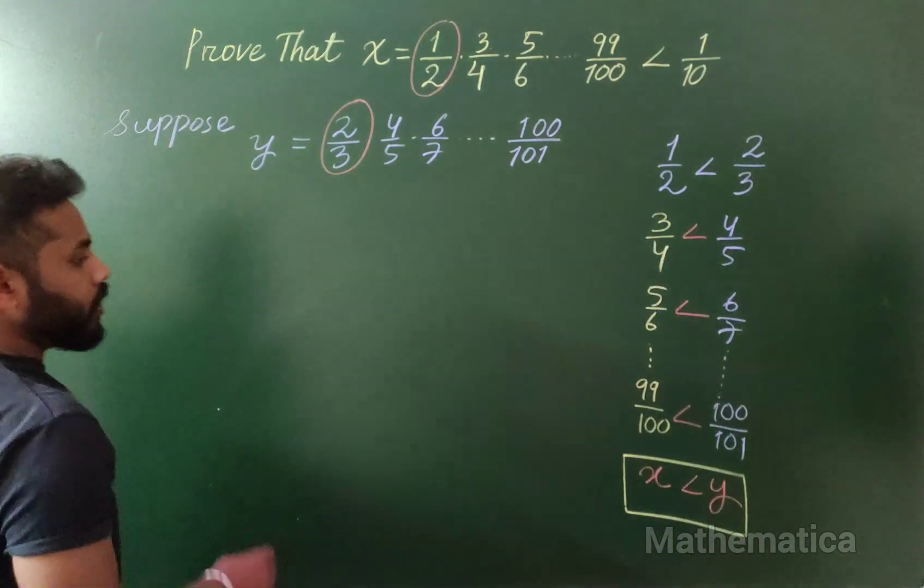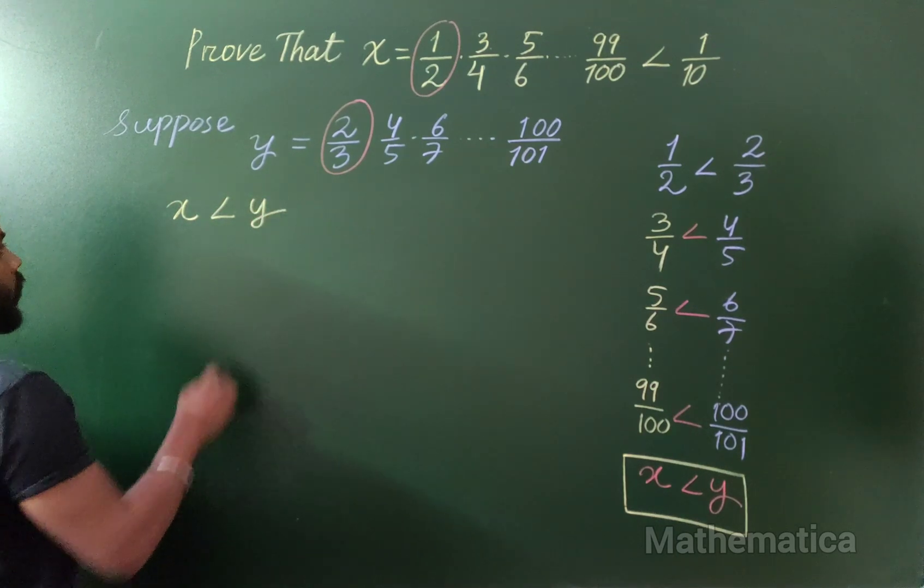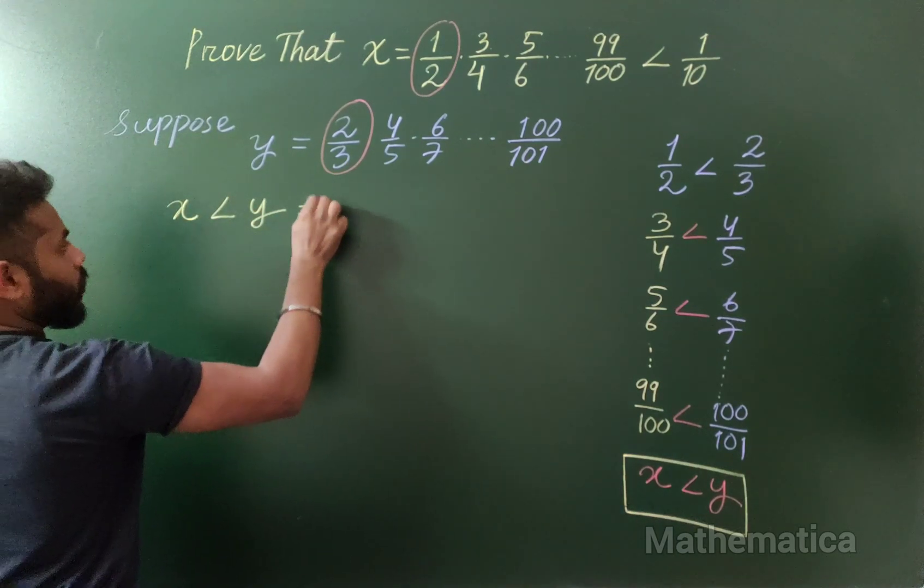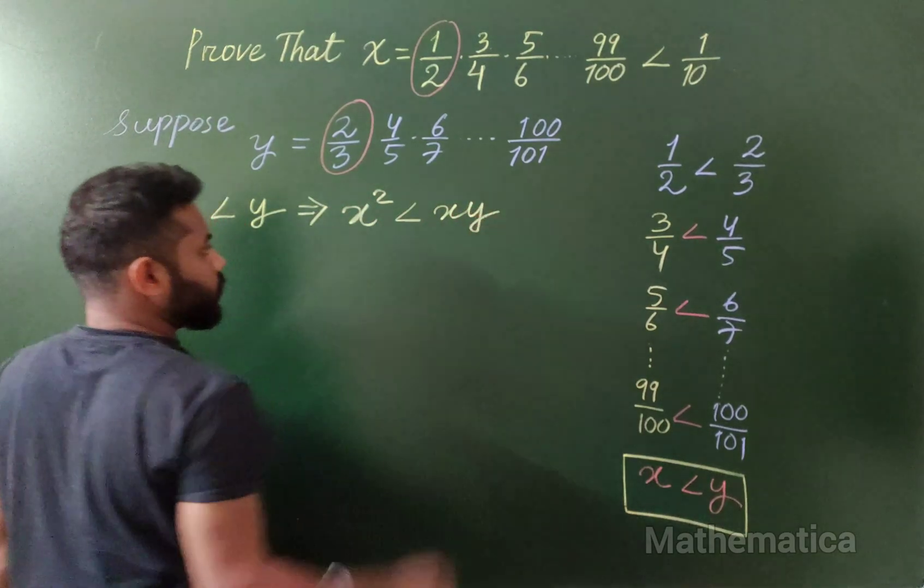If x is less than y, then we can say that x² must be less than xy.